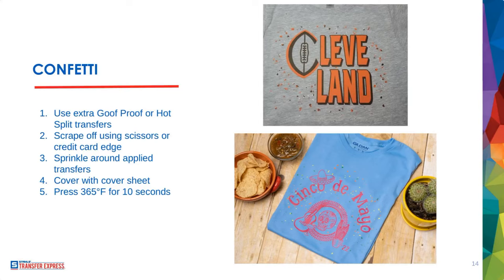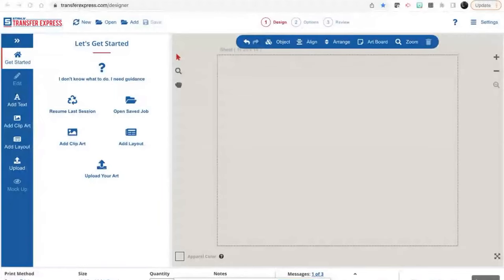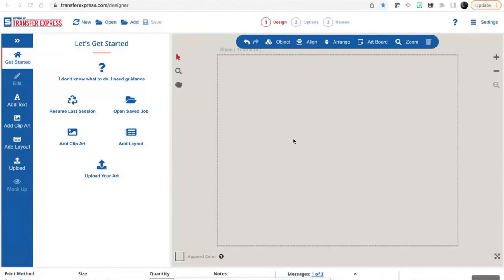Let's jump over to EasyView Online Designer and show you these features live. If you have never seen EasyView Online Designer, this is what it looks like. You have tons of controls on the left-hand side — this is the Add menu: Add Text, Add Clip Art, Layout, Upload. If you're uploading your own artwork, this is where you do it. File types allowed include PDF, JPEG, PNG, TIFFs, bitmaps, PSDs, SVGs, and more.